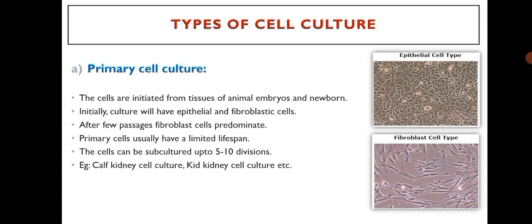Primary cell culture: cells are initiated from tissues of animal embryos and newborns. Initially the culture will have epithelial and fibroblastic cells; after few passages, fibroblast cells predominate. Primary cells usually have a limited lifespan and can be subcultured up to 5 to 10 divisions. Examples include calf kidney cell culture and kid kidney cell culture.